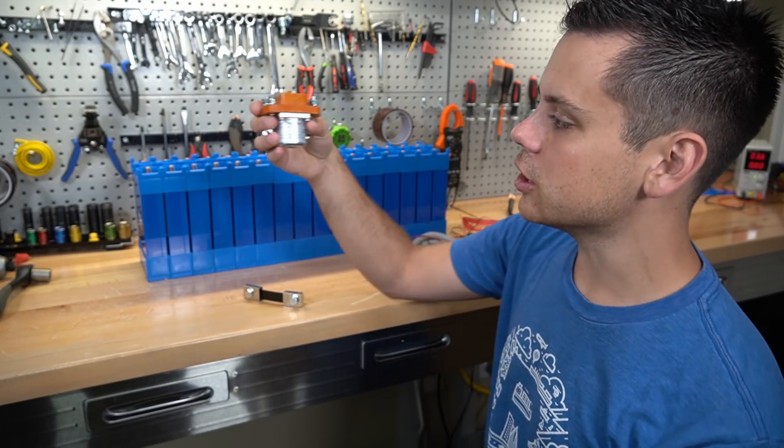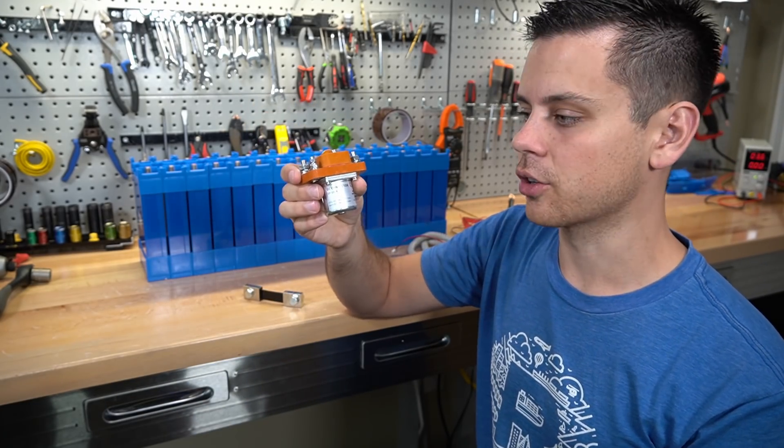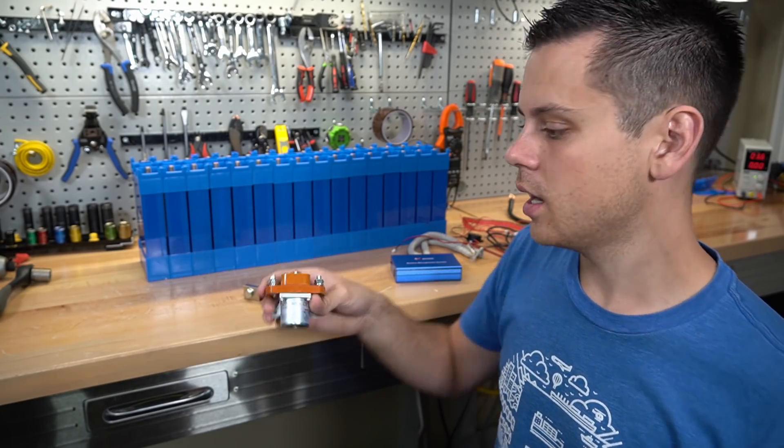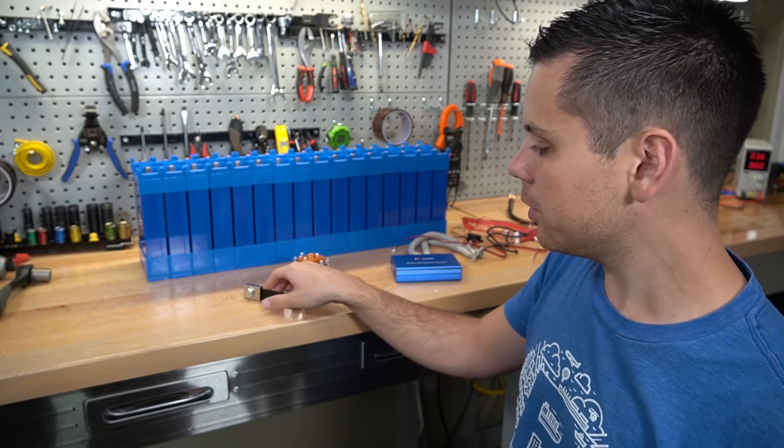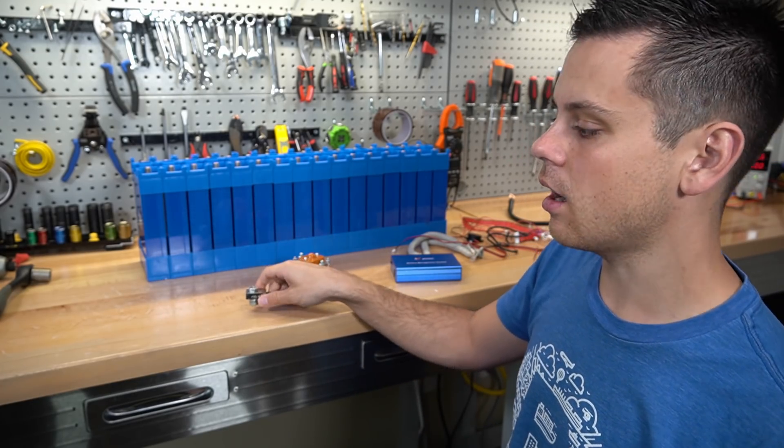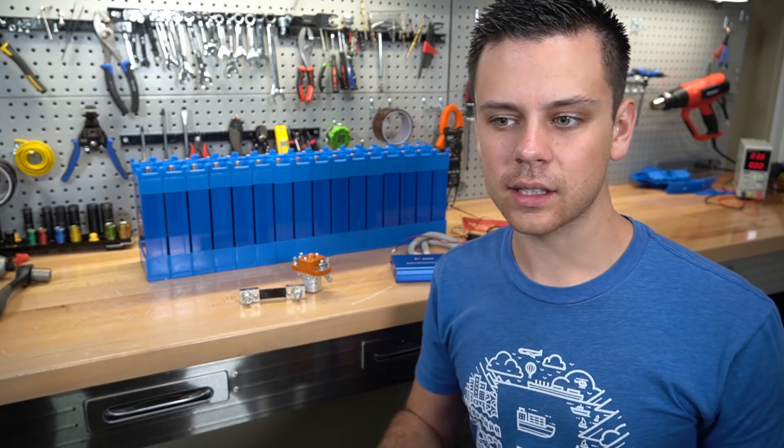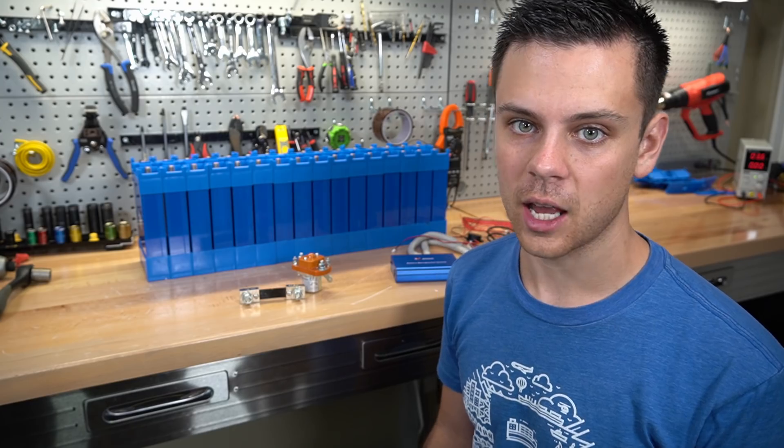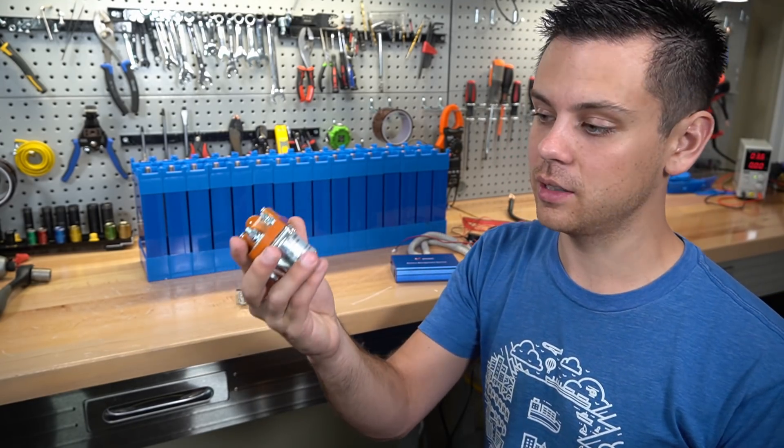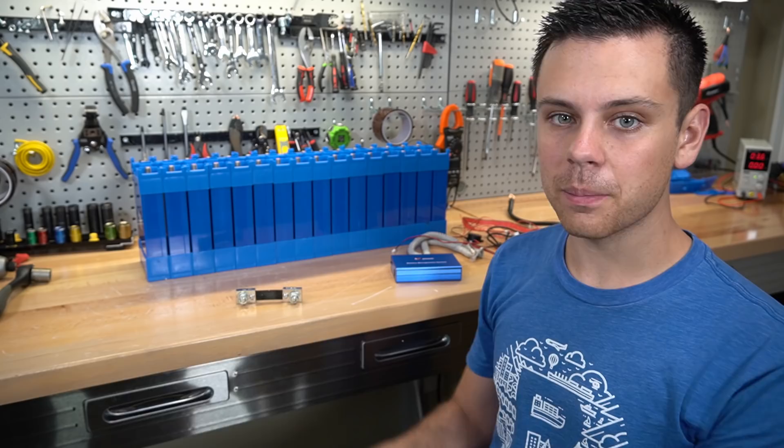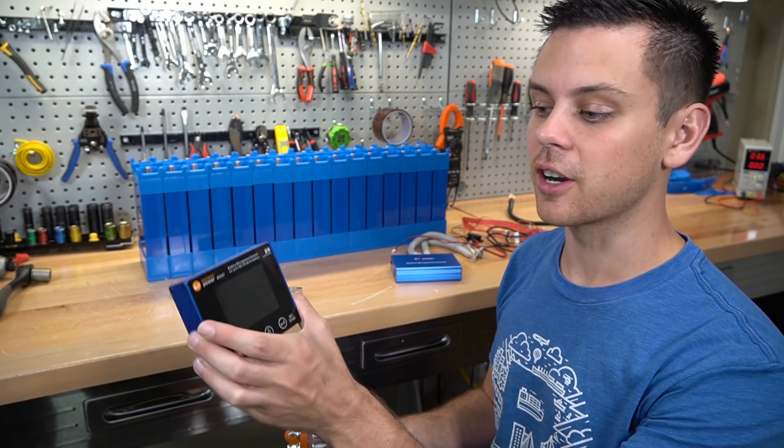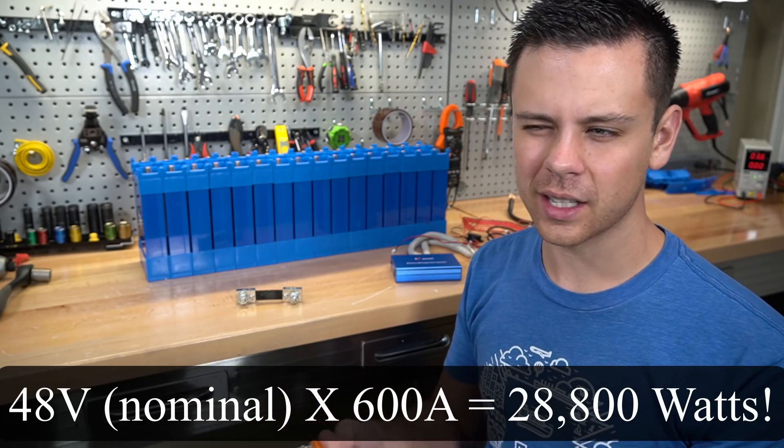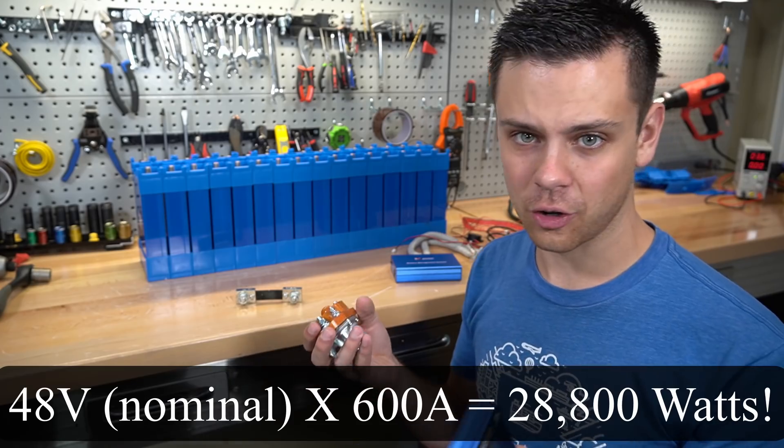Instead it uses a DC contactor or a very high quality DC relay that is made for this specific application. It uses a balance cable and a shunt to control the DC contactor. Instead of using a FET based BMS which is typically limited to 100 amps, you can actually buy a 600 amp DC contactor and push nearly 30,000 watts of power.